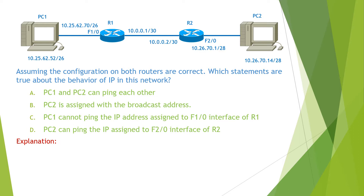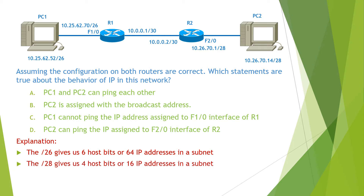As we can see, we are dealing with the slash 26 and slash 28 networks. The slash 26 gives us 6 host bits or 64 IP addresses in a subnet. The slash 28 gives us 4 host bits or 16 IP addresses in a subnet.